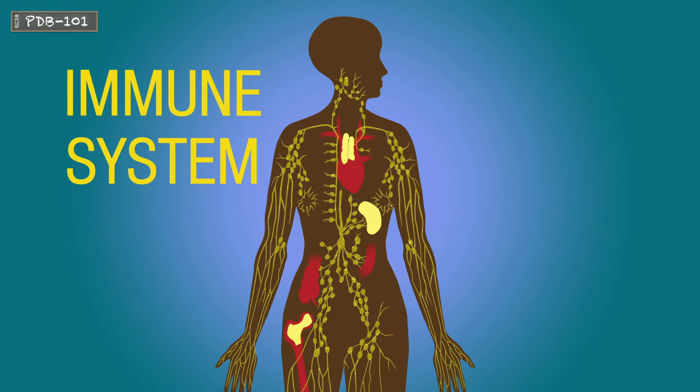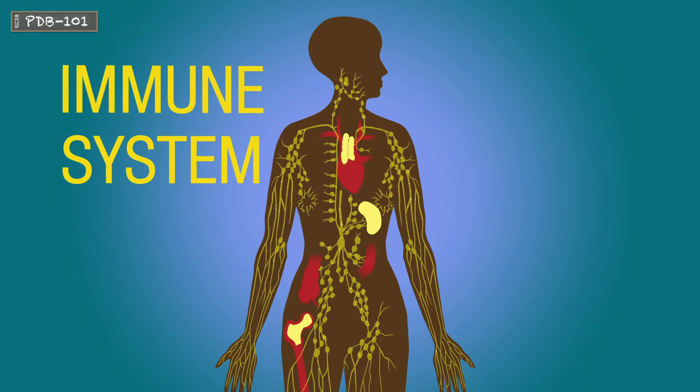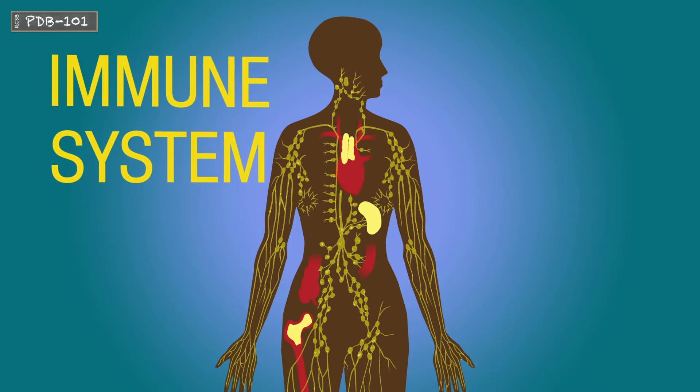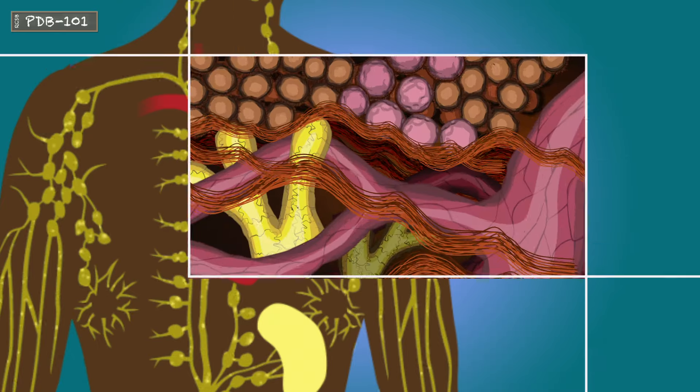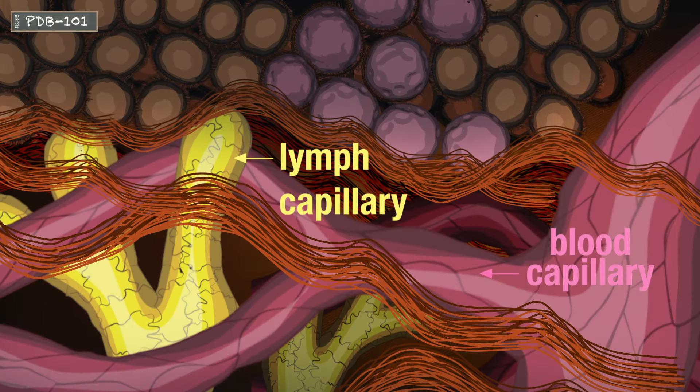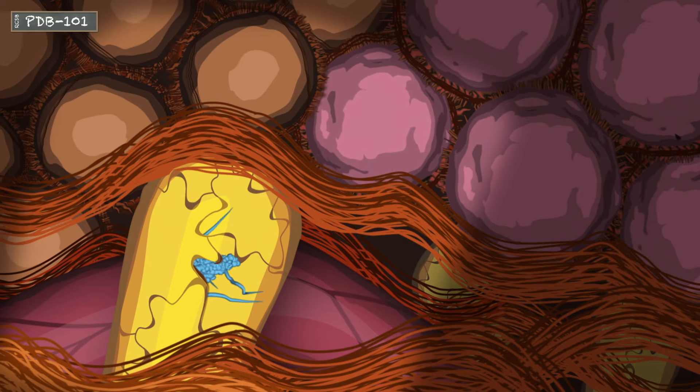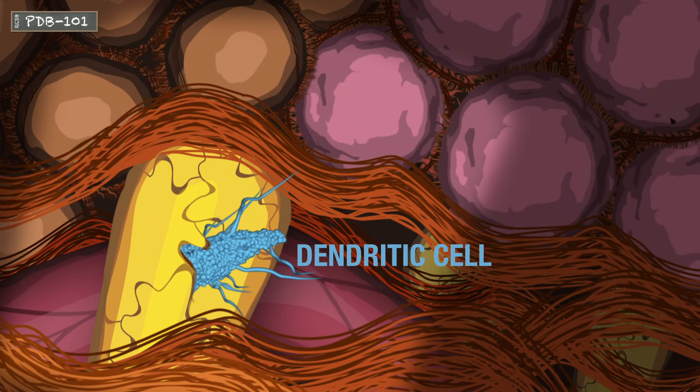Every day our immune system defends us against external threats such as invading pathogens and internal threats like cancerous cells. A key part of this defense is a specialized class of immune cells called dendritic cells.